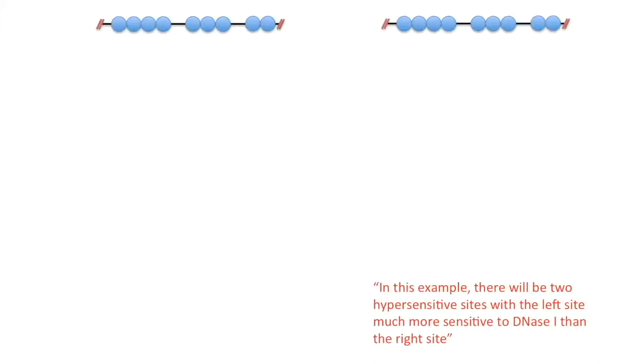Now let's think about what happens in DNA with several hypersensitive sites. Using the same protocol as before, initially the limiting DNase will only cut here, at the left red arrow, as that site is more sensitive to DNase than the right site.